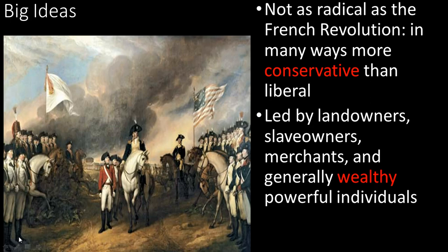We've got landowners, slave owners, merchants — Thomas Jefferson owning slaves is a well-known fact. Generally, wealthy people are going to be leading this revolution. Coming out of it, those wealthy people stay in government and hold on to power via property requirements for voting, the requirement to be a man, and the exclusion of Black people from voting. Understanding these things should make you challenge yourself: the American Revolution — how much did it really change? Certainly there's not going to be a king; we replace it with a representative democracy.